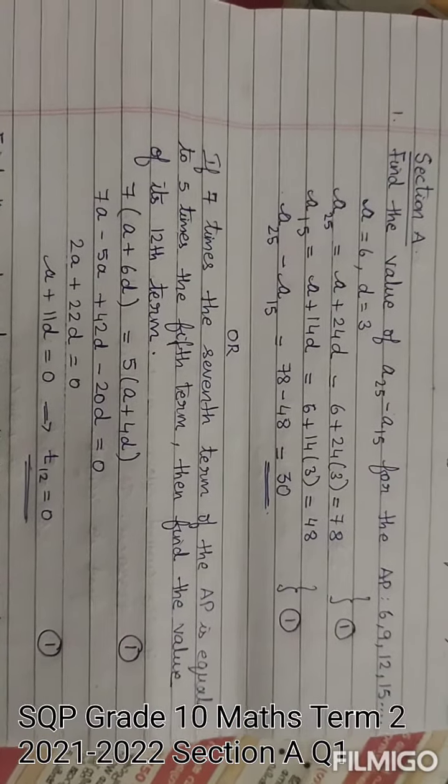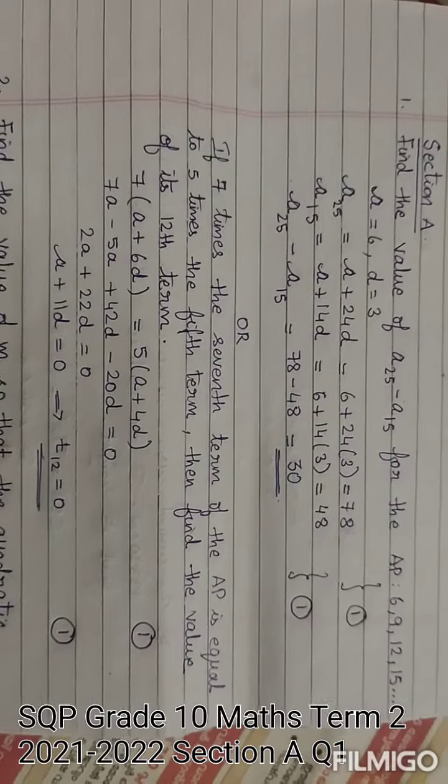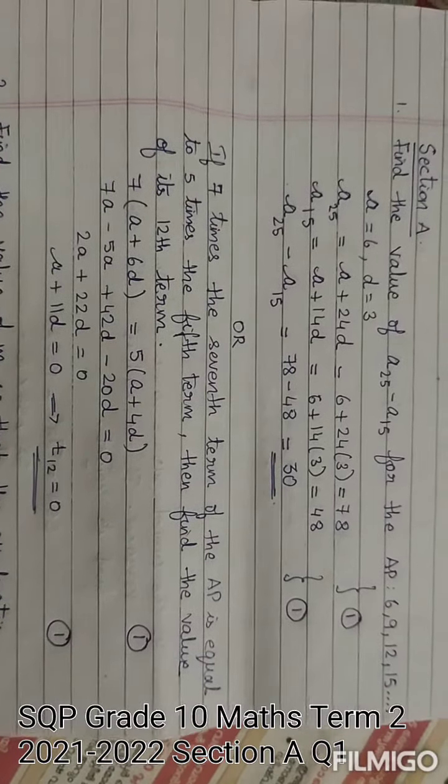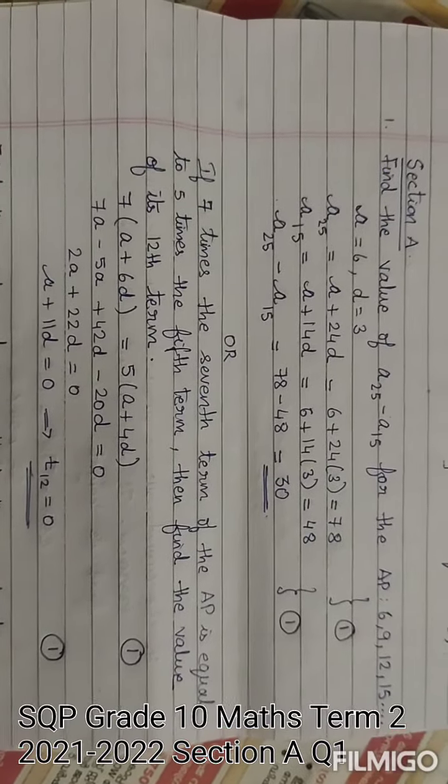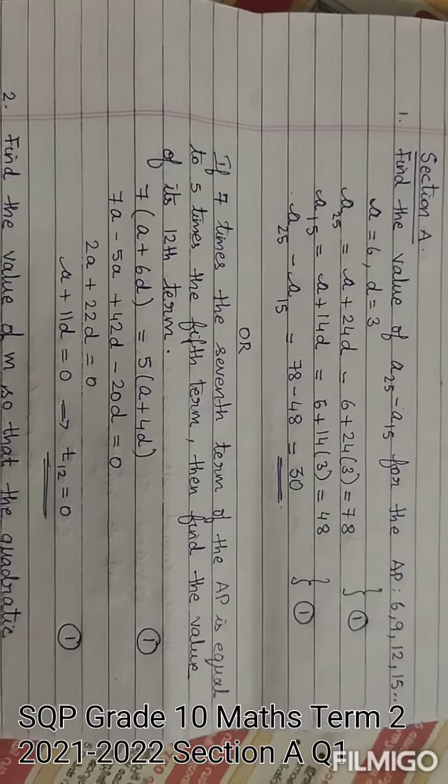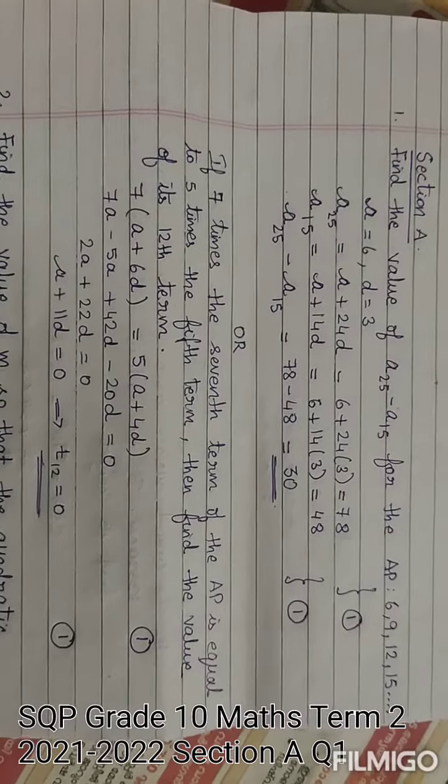Sample Question Paper Grade 10 2021-2022 Term 2 Mathematics Standard Section A Question No. 1: Find the value of A25 minus A15 for the AP 6, 9, 12, 15 etc.